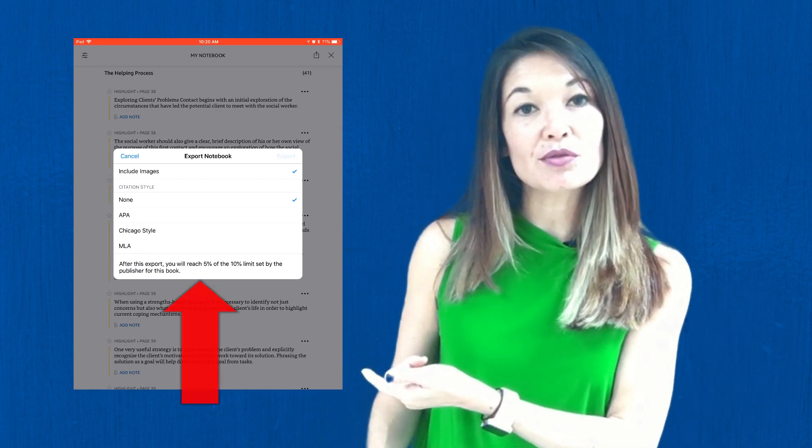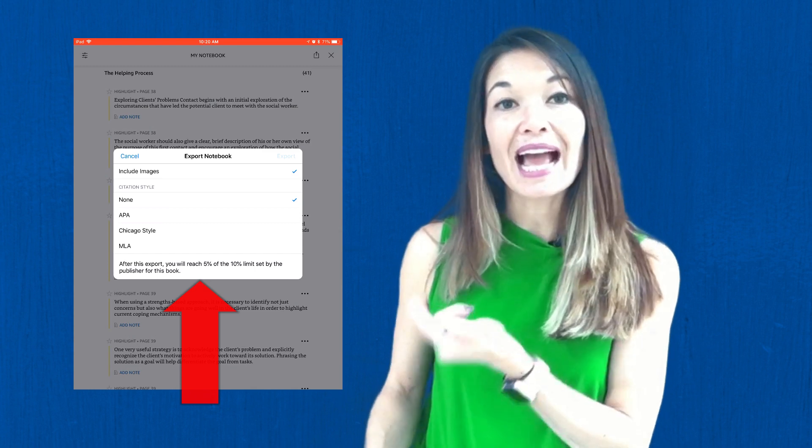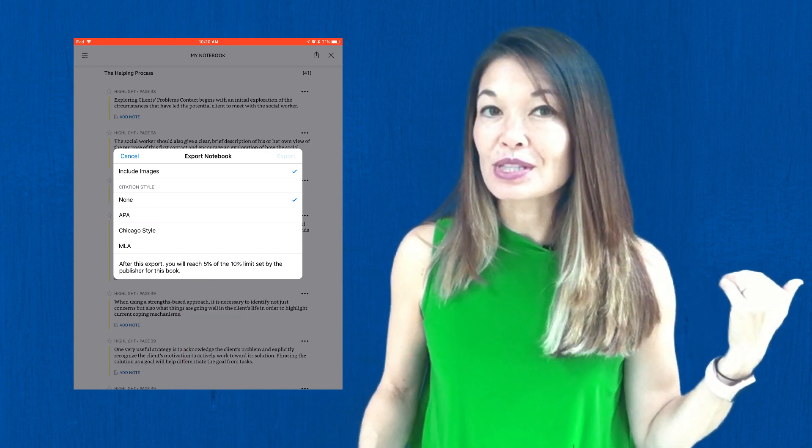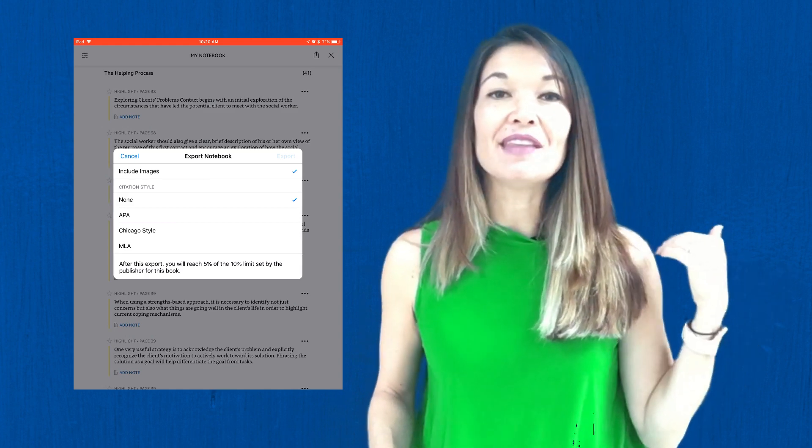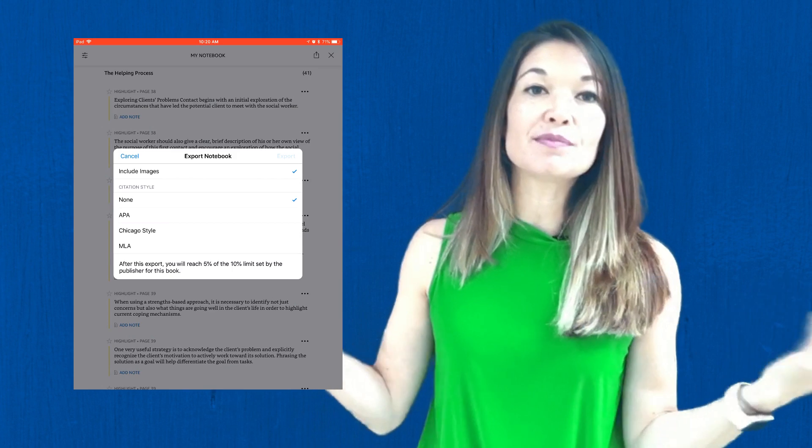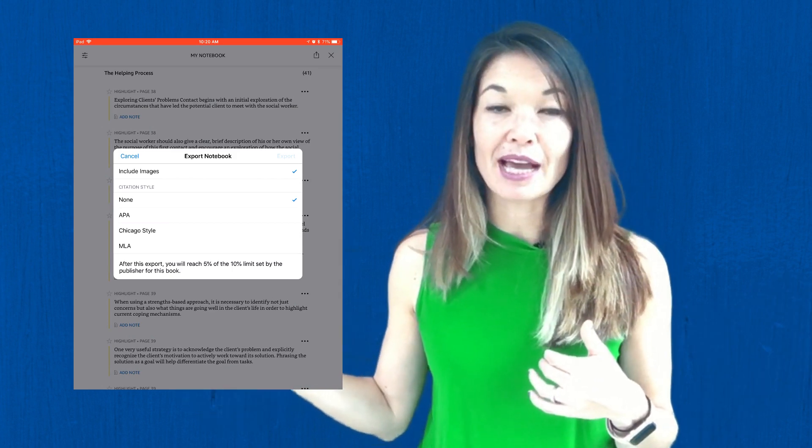Before you do you can see at the bottom of the screen that the Kindle is calculating how much of the book you are able to export. They definitely don't want you to export 100% of the book for copyright reasons and they set their limit at 10%. I'm up to 4% now which gives me lots more room to highlight than the website highlight page allowed.